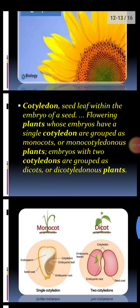A cotyledon is the seed leaf within the embryo of a seed plant. Flowering plants whose embryos have a single cotyledon are grouped as monocots — 'mono' meaning single or one — or monocotyledonous plants. Embryos of plants with two cotyledons are grouped as dicots, or dicotyledonous plants.